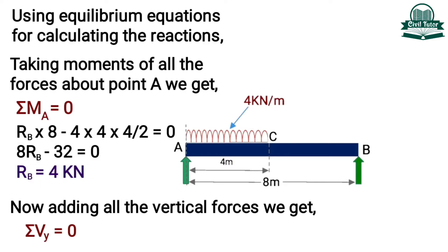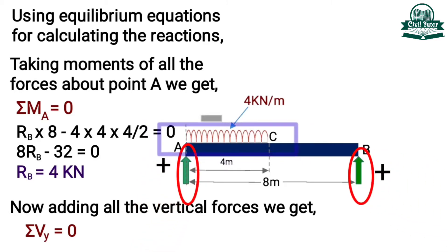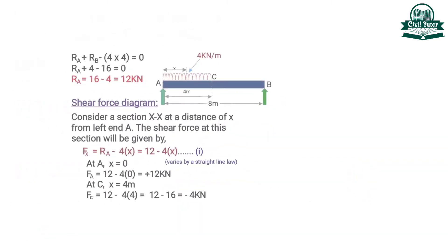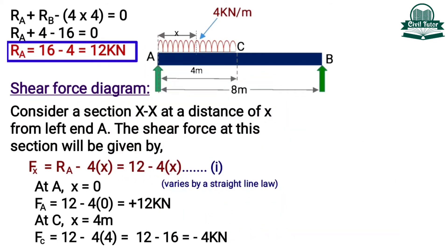For calculating the support reaction RA we will use another equilibrium equation in which we will add all the vertical forces and equate them to 0. We will take upward forces positive and downward forces negative. So we have RA plus RB minus load intensity 4 into 4 meter equal to 0. By substituting RB we get RA equal to 12 kN.